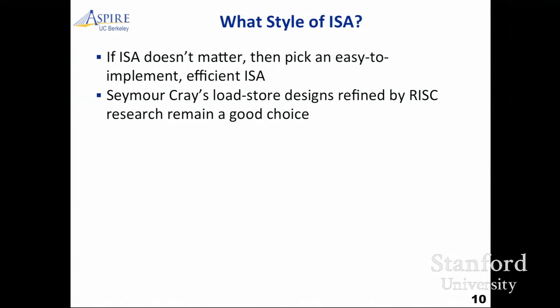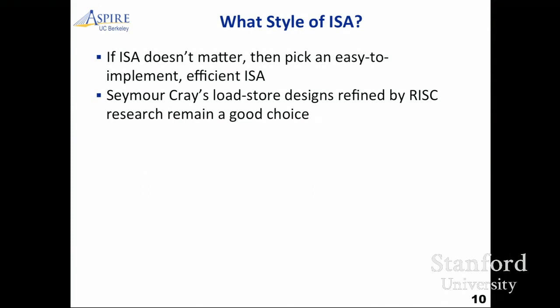We all agree we need a free and open ISA. So which one are we going to use? What style of ISA? If the ISA doesn't really matter in terms of end system energy performance, as implementers you want to pick one that's easy to implement — there's no reason to do something like x86. You'd want something relatively simple. RISC-style, load-store designs that later refined into RISC — those seem like a great choice. Those design ideas have survived many generations of technology, and a RISC-style ISA seems like the right place to put your stake in the ground.